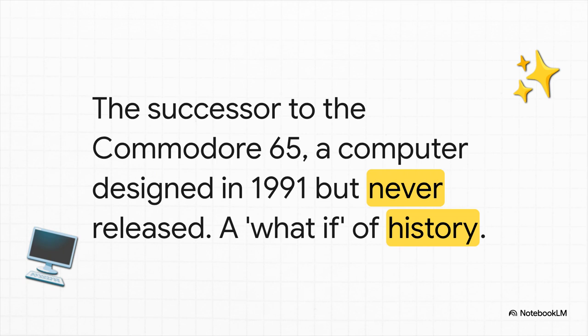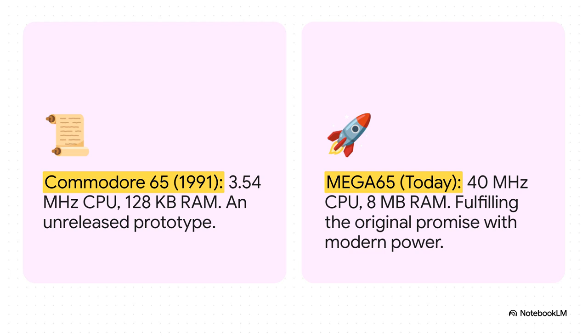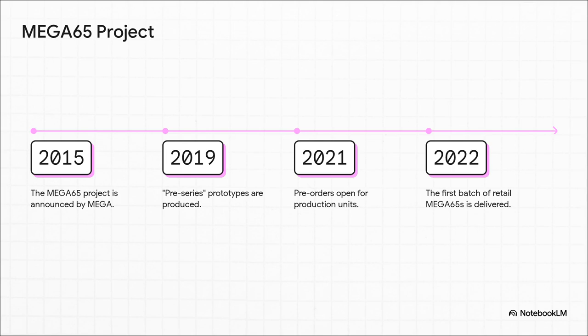Let me introduce you to the Mega 65. This is the spiritual successor to the Commodore 65, a machine that Commodore designed back in 1991 to be the next big thing, but then they canceled it before it ever hit the shelves. For decades, it was one of the great what-ifs of computing history. The original C65 prototype was a pretty modest step up with a 3.54 MHz CPU and 128 kilobytes of RAM. The Mega 65, though, is a total quantum leap — fulfilling the promise of that original design with way more power and modern features, all while staying true to that classic 8-bit spirit. This timeline shows years of pure dedication from a team of volunteers and engineers, taking the project from an ambitious idea in 2015 all the way to a real physical machine landing in the hands of a super-passionate community.